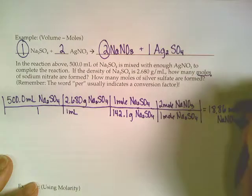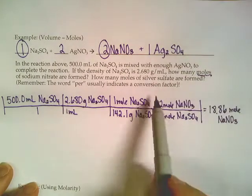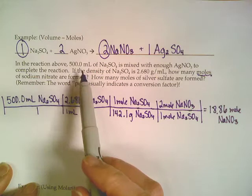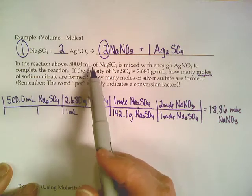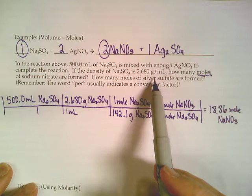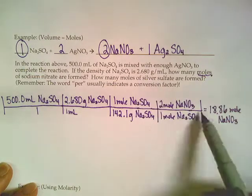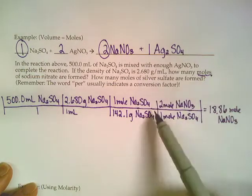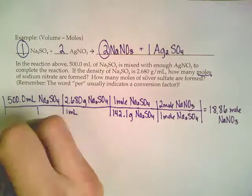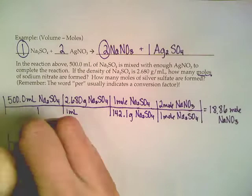Now the second part of this problem wanted you to figure out moles of silver sulfate. But really, you still have the same given. The way you would get that given into moles isn't going to change. The only thing that's going to change is this last step here, where you're comparing it to the different chemical. So it's going to look identical to that top one.